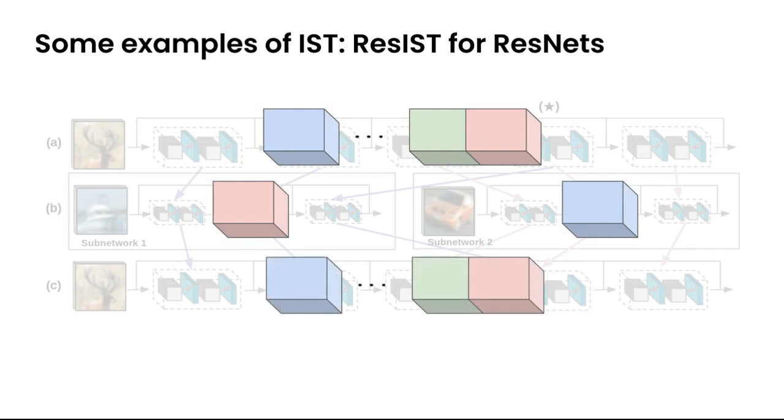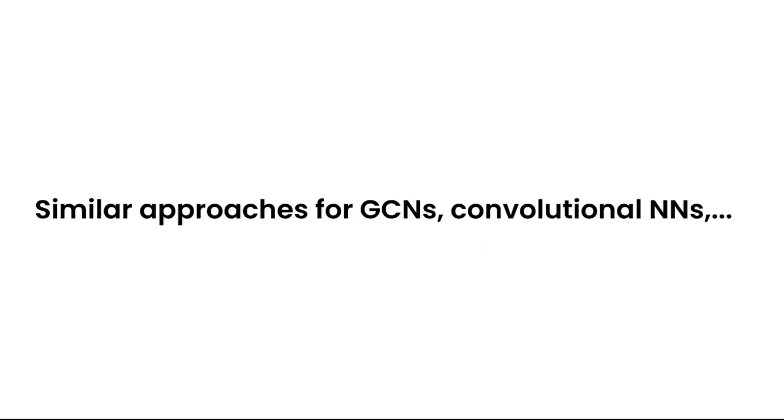Overall, as long as the neural network model can be decomposed in some way, an IST framework could be applied. For example, for the sake of time, similar ideas with different engineering efforts lead to IST for graph convolutional networks or convolutional networks in terms of filter-wise splitting.